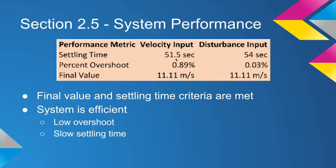Before this disturbance is introduced, the system achieves its steady state value of 11.11 meters per second or 40 kilometers per hour. This satisfies our final value requirement.